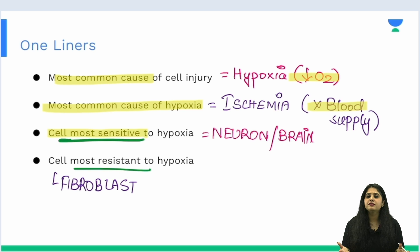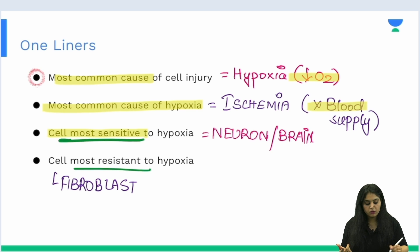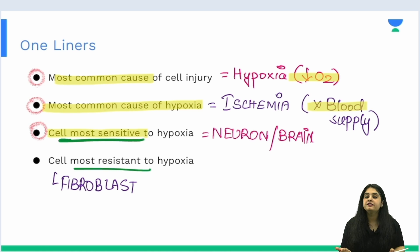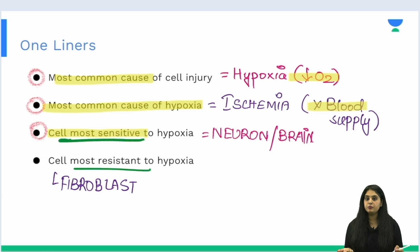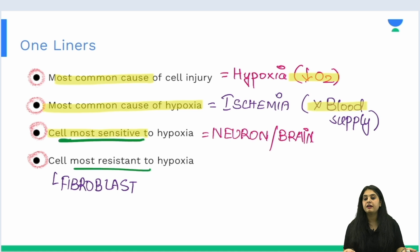This slide is a good overview and a simple start to the chapter. Quick recap: What is the most common cause of cell injury? Hypoxia. What is the most common cause of hypoxia? Ischemia. Which cell is most sensitive to hypoxia? The neurons of the brain. Which cell is most resistant to hypoxia? The fibroblast.